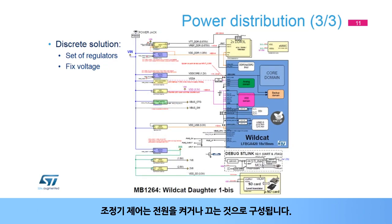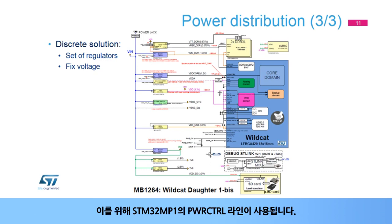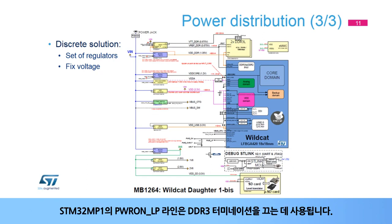This slide shows how the discrete power scheme is built. The regulator's control consists of powering on or off the supply. The PWR-CTRL line of the STM32MP1 is used for this. The PWR-ONLP line of the STM32MP1 is used to switch off the DDR3 terminations.